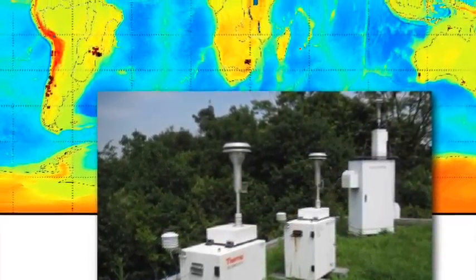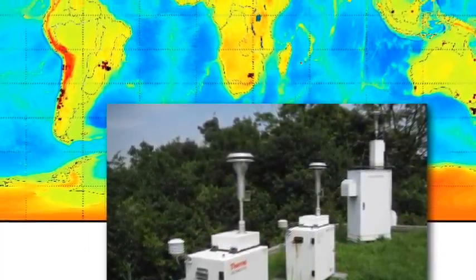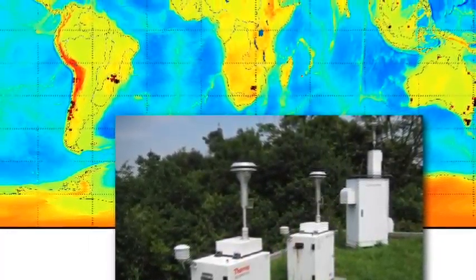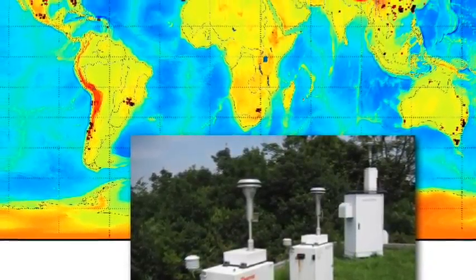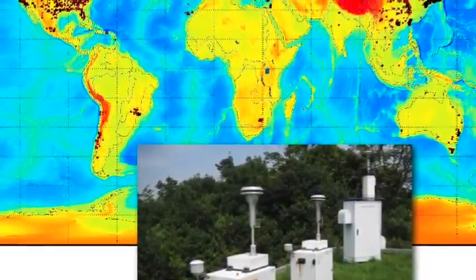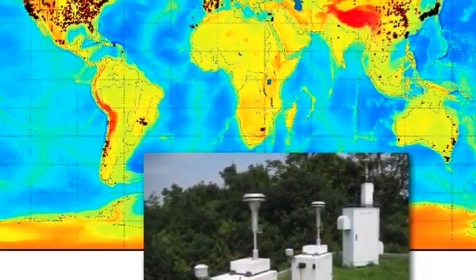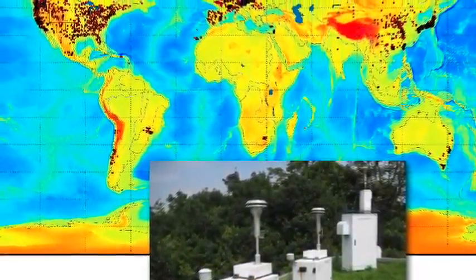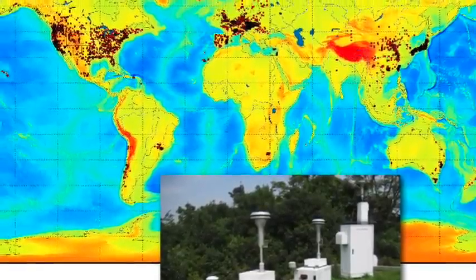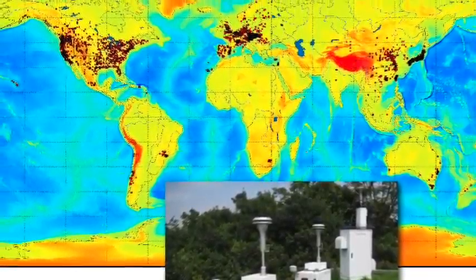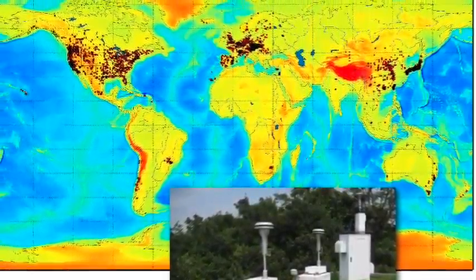Every red square on this map is a site where airborne particulates are being measured on an hourly basis. This comprises more than 55 countries and more than 8,000 individual sites.